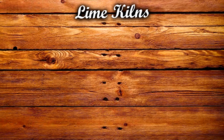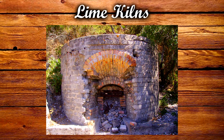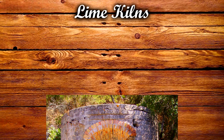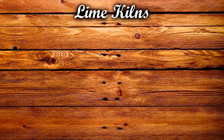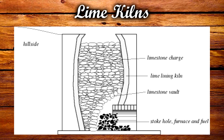Lime burners used kilns to produce lime. Lime kilns can be split into two categories: flare kilns and draw kilns. In a flare kiln, a bottom layer of coal was put in and on top of that the kiln was filled with chalk. They let the fire burn for days, which transformed the chalk into lime, and then the kiln was fully emptied.